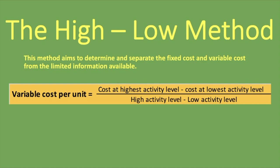The numerator is the cost at the highest activity level — that's the rand or dollar amount. You take the cost at the highest activity level minus the cost at the lowest activity level. The denominator looks at the actual activity. So if you're looking at hours, you take the high activity level hours and deduct the low activity level hours. If you're looking at units, then that is what you take into account.